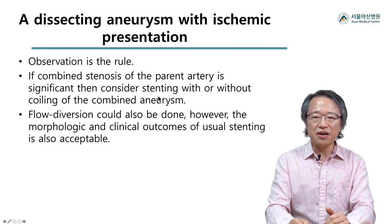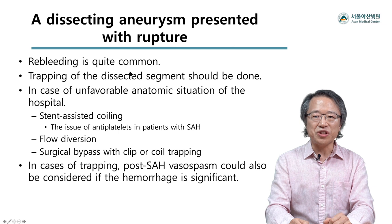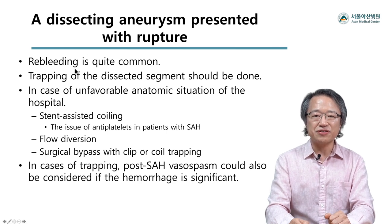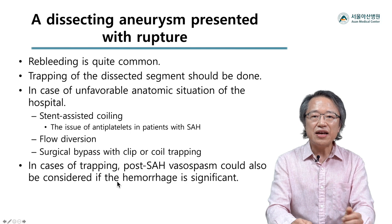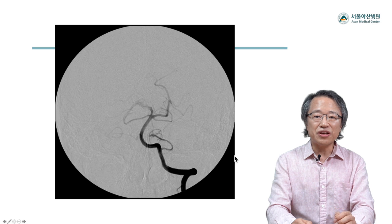Various types of stent can be used with or without combined coiling of the aneurysm sac. The clinical consequence of a dissecting aneurysm presenting with subarachnoid hemorrhage is usually quite ominous. Early intervention is essential for the prevention of re-bleeding, which is quite common in untreated cases. Trapping of the dissected segment is the most secure treatment. Sometimes the treatment decision can be complex — the patient was presented with sudden weakness, and the initial CT scan showed a thrombotic mass.